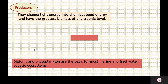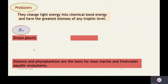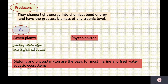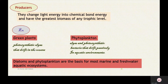What are the producers? They convert light energy from the sun into chemical bond energy and have the greatest biomass of any trophic level. Examples include green plants, photosynthetic algae that drift in the oceans, phytoplankton, and photosynthetic bacteria in aquatic environments. Diatoms and phytoplankton are the basis for marine and freshwater aquatic ecosystems.